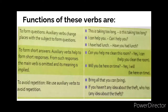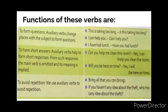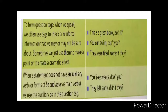The second function is to form short answers. You don't have to say the whole sentence in the answer — you can just use the auxiliary verb. For example, 'Will you be here on time?' — 'Yes, I will.' You don't have to say 'I will be here on time.' Then we use auxiliary verbs to avoid repetition. For example, 'Bring all that you can' — instead of repeating 'bring' twice.